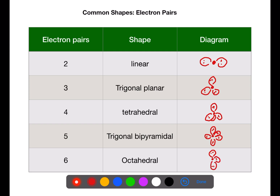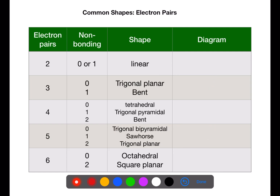From this, using the non-bonding pairs, you can then work out what shape the molecule itself will make. If you have two electron pairs and neither of them are non-bonding, you will have a linear shape with three atoms in a row. If you have one non-bonding, you'll have a linear shape with two atoms. If you have three electron pairs and none of them are non-bonding, you'll have a trigonal planar shape for the molecule. However, if one of those is a non-bonding pair, it will be a bent shape.